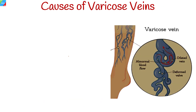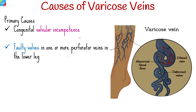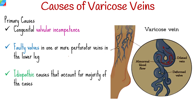The causes of varicose veins can be divided into primary and secondary. The primary causes include congenital valvular incompetence, faulty valves in one or more perforator veins in the lower leg, and idiopathic causes that account for the majority of cases.